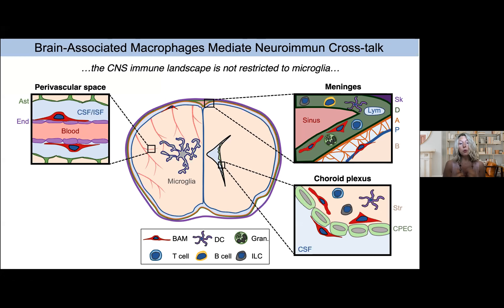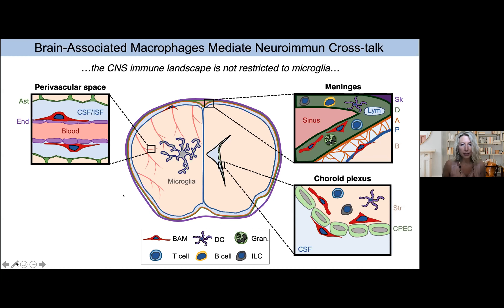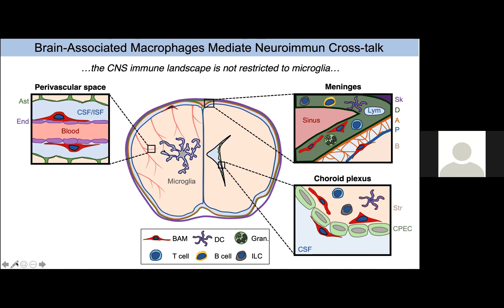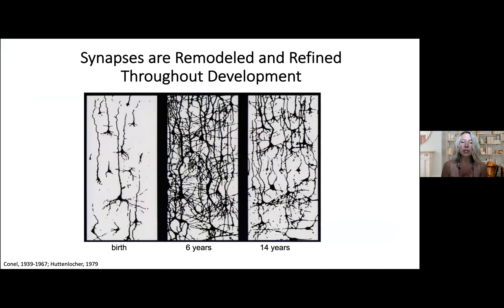With single-cell sequencing, the field is starting to better define the states and functions of border-related macrophages in the perivascular spaces, meninges, and choroid plexus. For today's talk I'll focus on microglia, but some of the same approaches may be relevant to these other populations as well, since they represent an interface between peripheral signals and the brain.